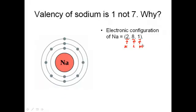Let us look at the figure. Here, this particular figure shows that there is only 1 electron in its outermost shell, which is the valence electron.